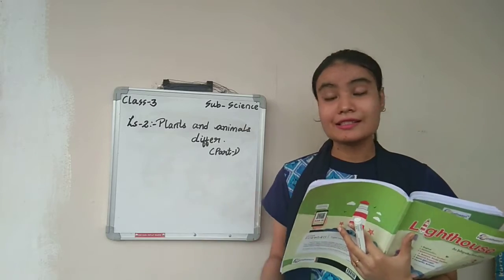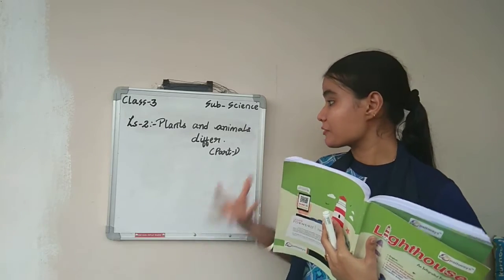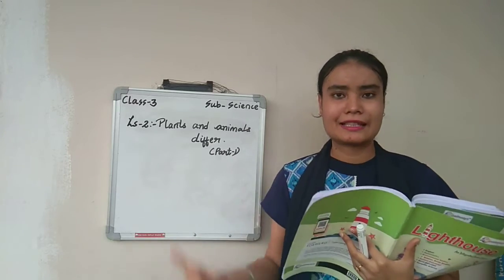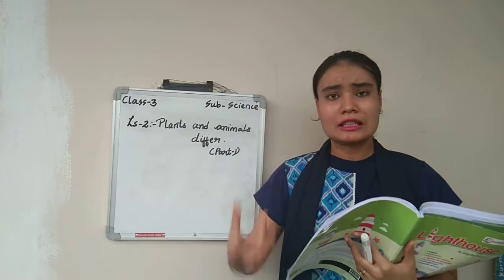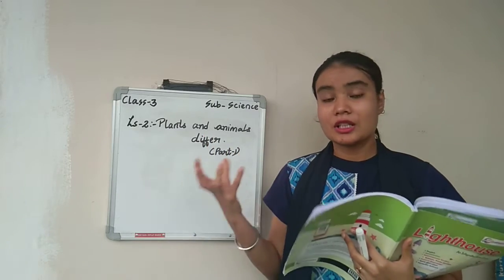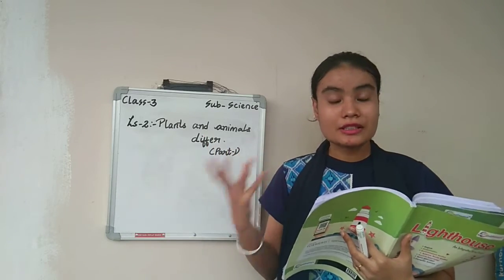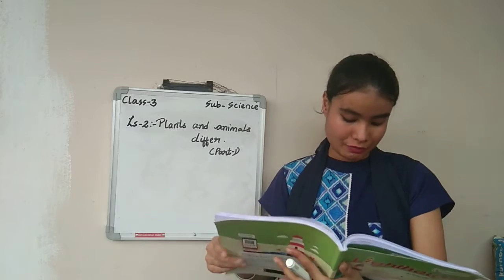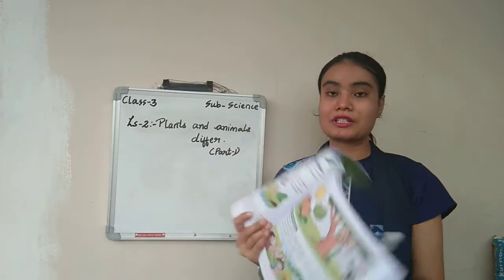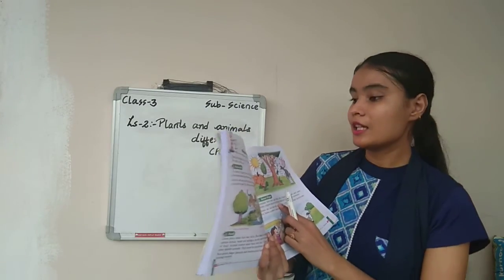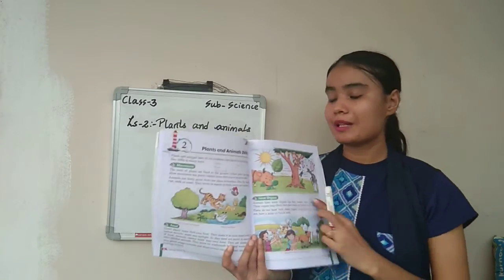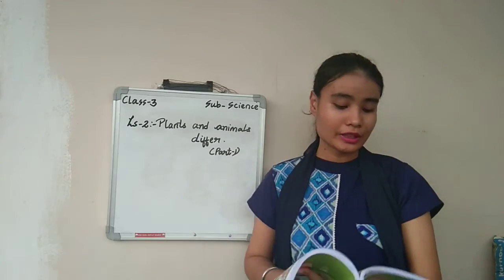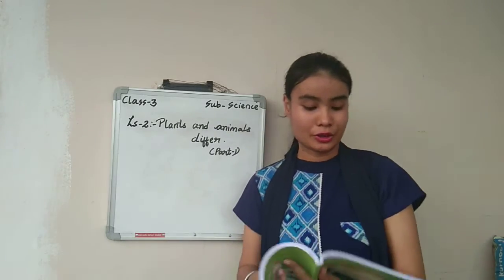So in this lesson, we will learn about the difference between plants and animals — their movement, their food, their behavior. Let us discuss. Everyone, take out page number 90, that is lesson number 2: Plants and Animals Differ.